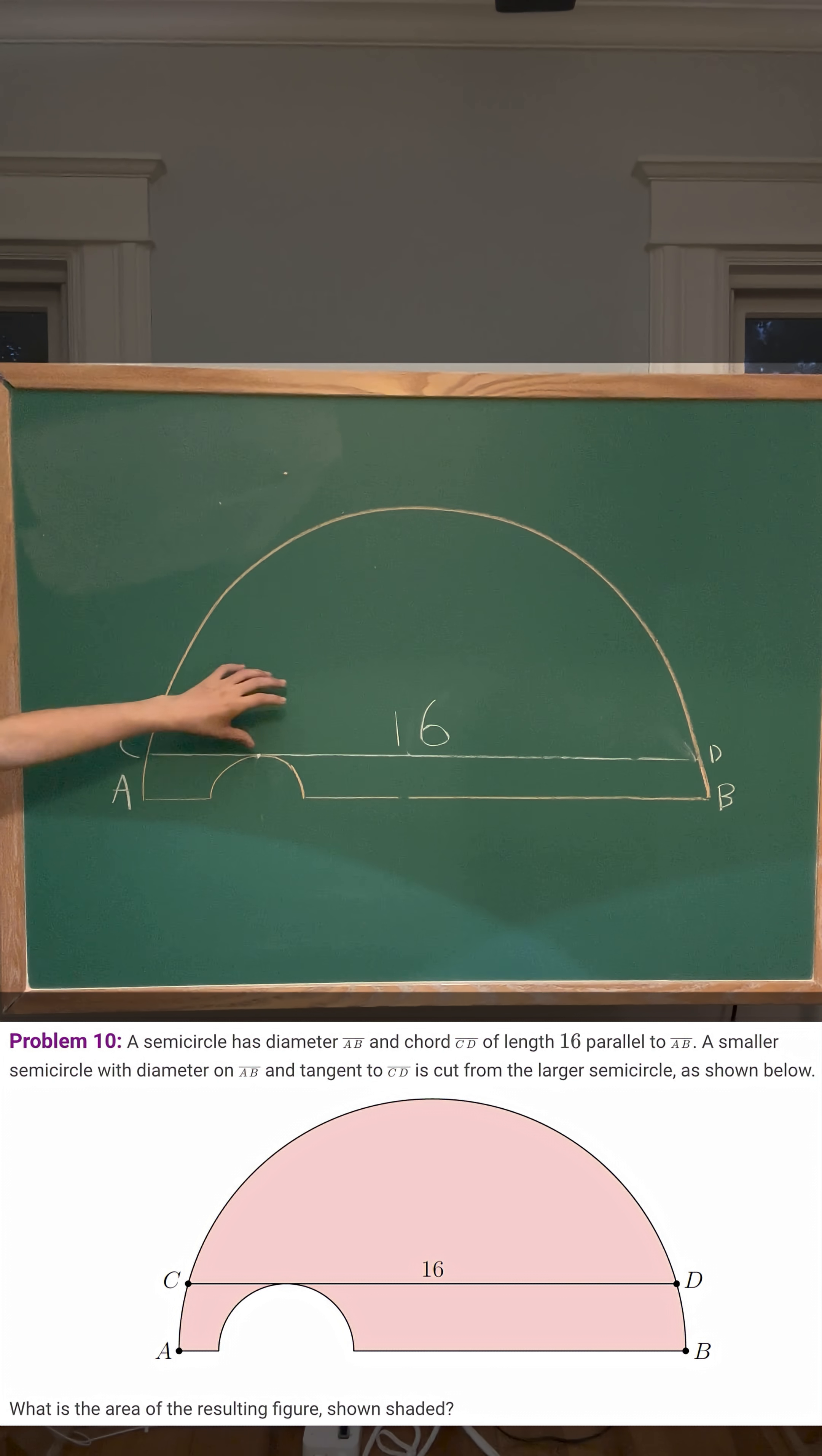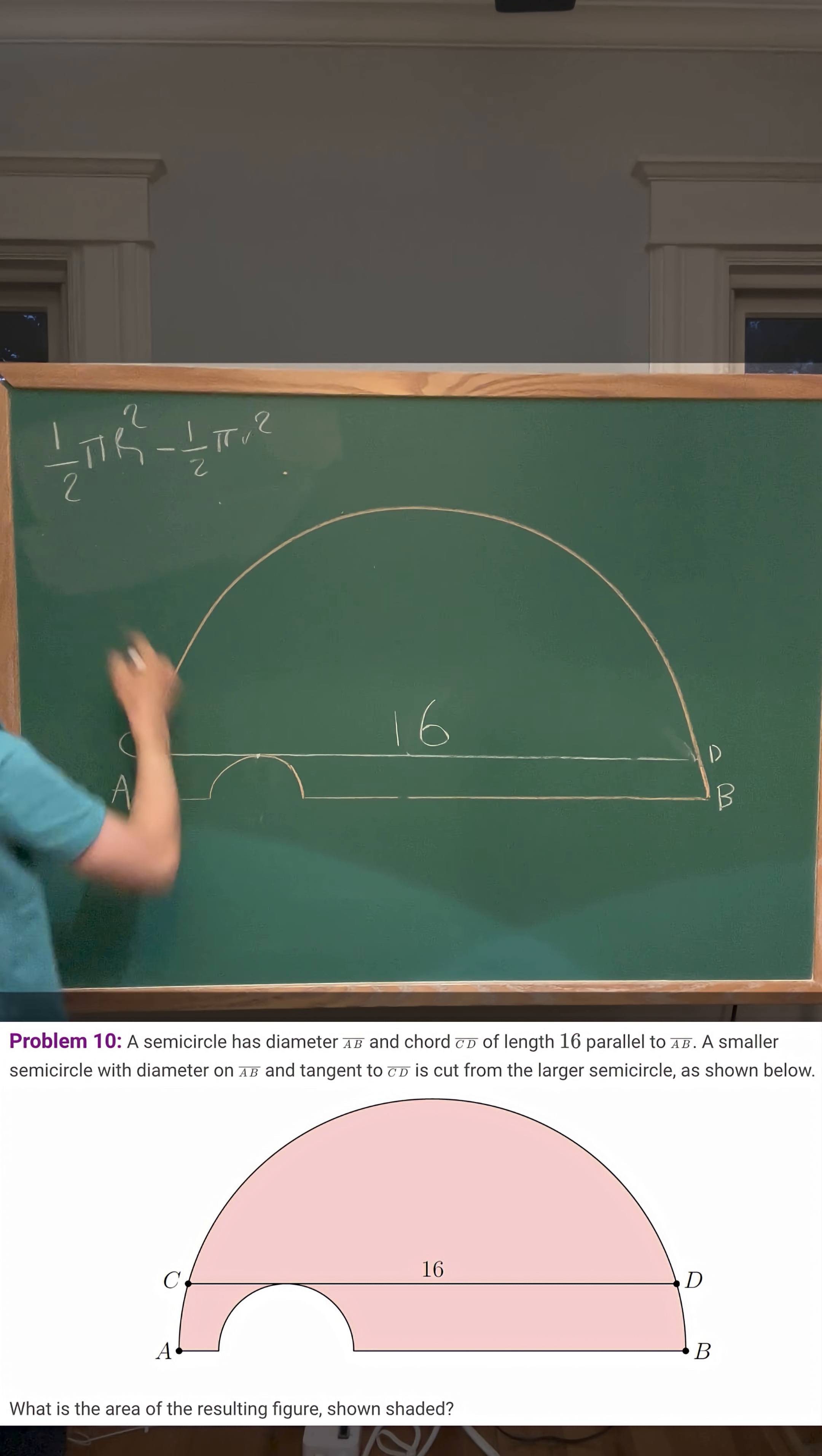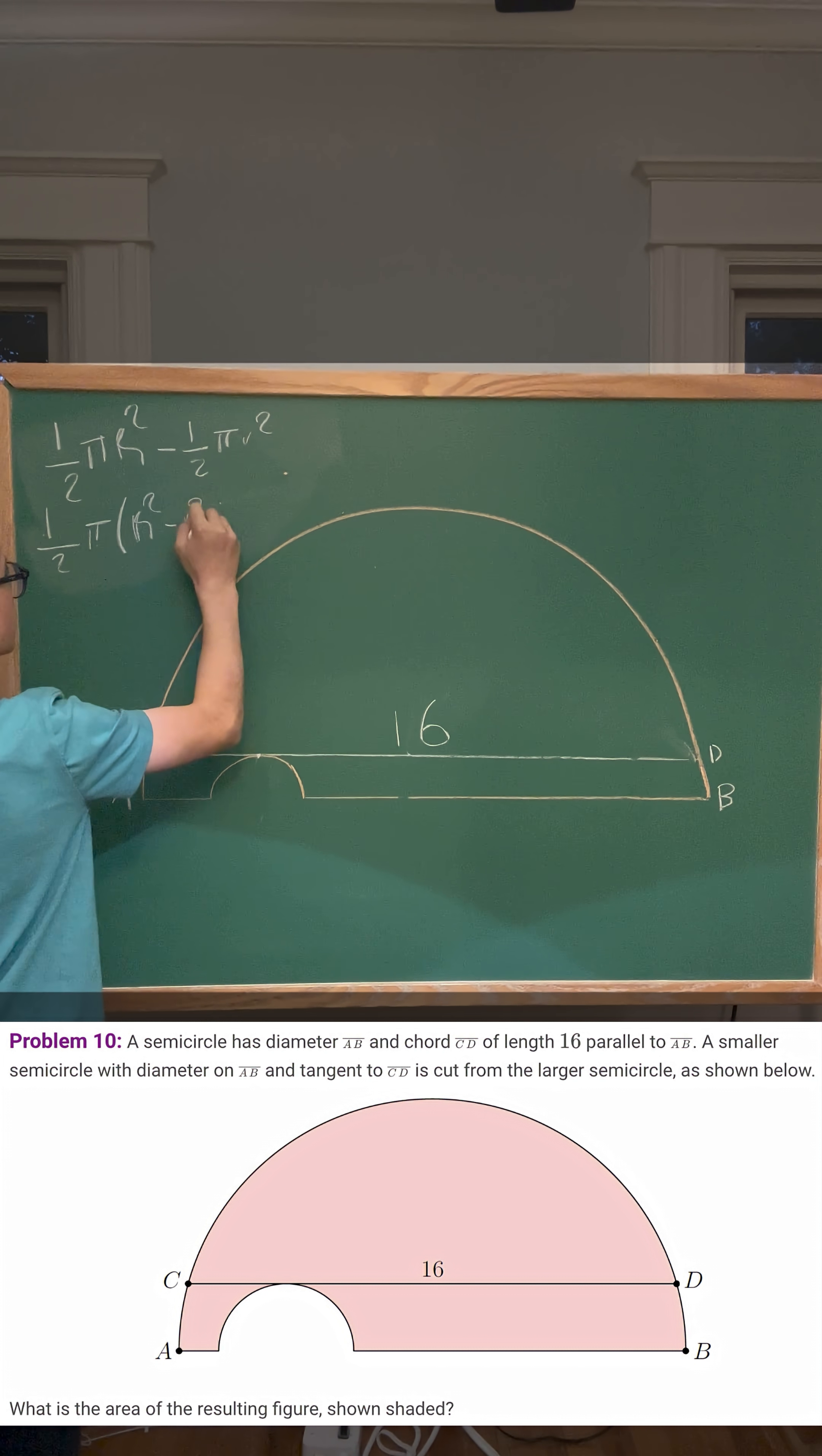If we calculate this in algebraic terms, it would be 1/2 πR² (this is the big radius) minus 1/2 π of the small radius squared. If we factorize 1/2 π, it would result in 1/2 π times the big radius squared minus the small radius squared.